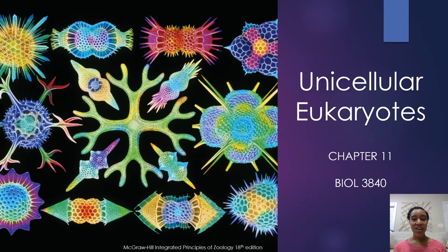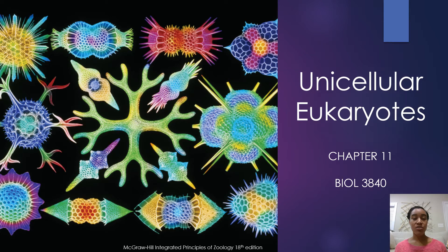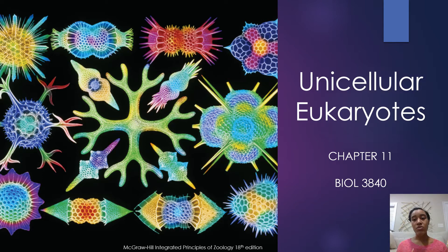Welcome back everyone, and welcome to the next big chunk of this semester. From this point until we get towards the end of the semester, we're going to be discussing the various phyla of animal life that exists on this planet. We're going to start with unicellular eukaryotes — they're not technically considered to be animals, but they are eukaryotic and represent the most simple form of where animals came from. This is chapter 11 in your book.